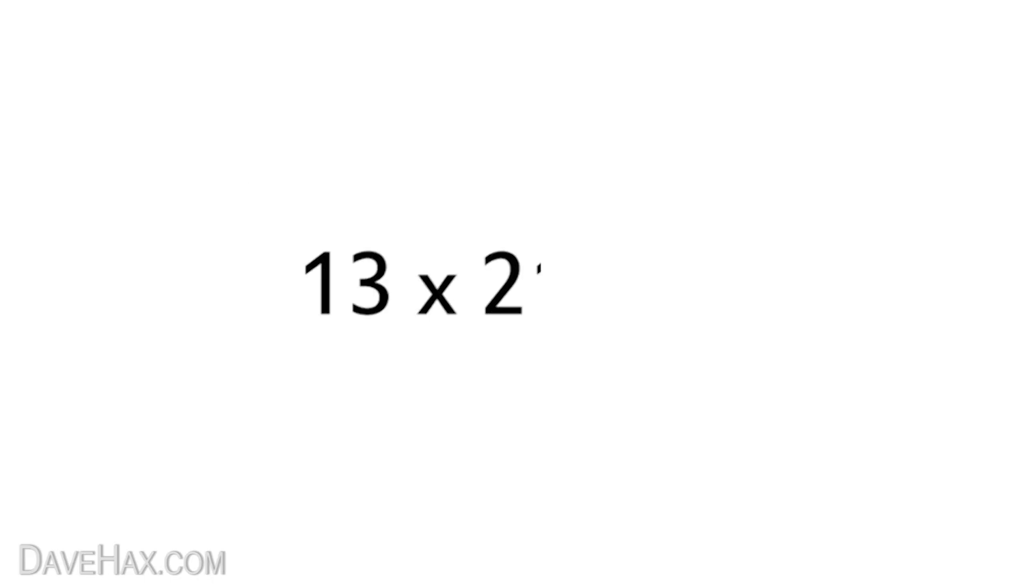We'll start with 13 times 21. As we can see the first digit in this equation is 1 which means we draw one straight line diagonally like this. The next digit is 3 so we leave a little space then draw three lines parallel to the first one like this.